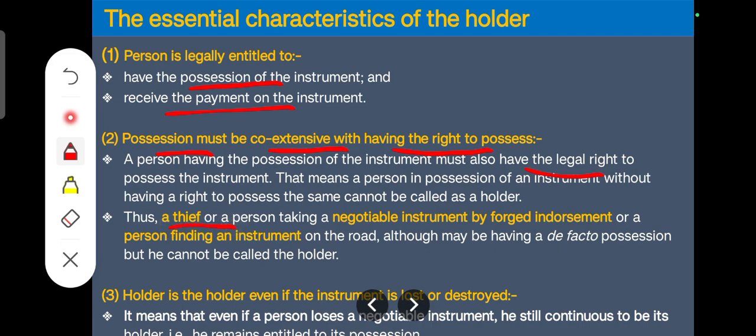Only having possession does not make you the holder; you must also have a legal right. A thief who has taken possession of a negotiable instrument, or any person who has taken it under a forged endorsement, will not be called the holder. Third, a holder remains the holder even if the instrument is lost or destroyed — he or she will still be known as the holder in the eyes of law.